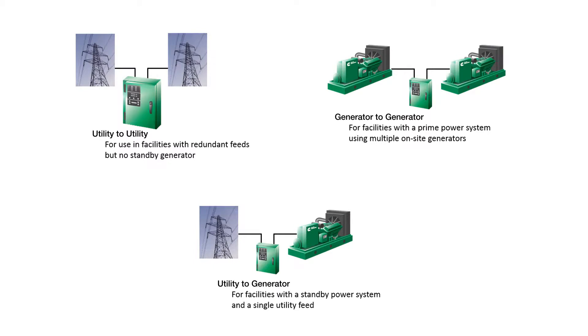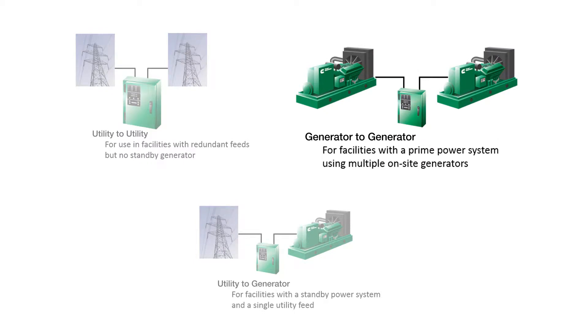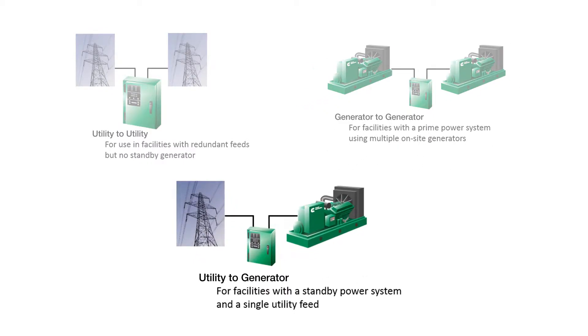An automatic transfer switch, commonly known as ATS, is used to transfer power between two different power sources. For example, the transfer switch can be used to transfer power between two utility sources, two generator sources, or the most commonly used application, utility-to-generator set.